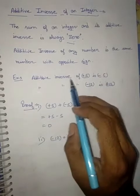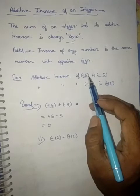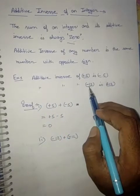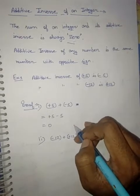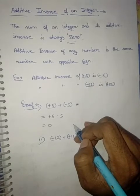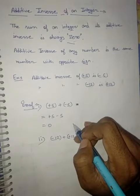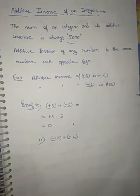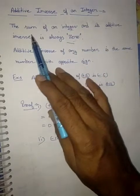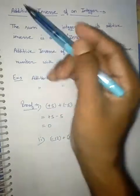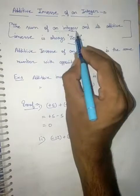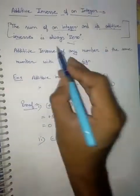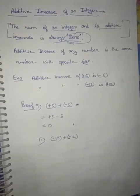Additive inverse of plus 5 is minus 5. Additive inverse of minus 12 is plus 12. Additive inverse of 100 is minus 100. Additive inverse of minus 1200 is plus 1200. The additive inverse of any number is that same number with the opposite sign. The basic property of additive inverse is that the sum of an integer and its additive inverse is always 0.